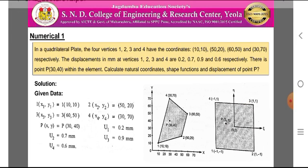Consider the first numerical: in a quadrilateral plate, the four vertices 1, 2, 3, and 4 have the coordinates (10,10), (50,20), (60,50), and (30,70) respectively. The displacements in mm at vertices 1, 2, 3, and 4 are 0.2, 0.7, 0.9, and 0.6 respectively. There is a point P having coordinates (30,40) within the element. Calculate the natural coordinates, shape functions, and displacement at point P.